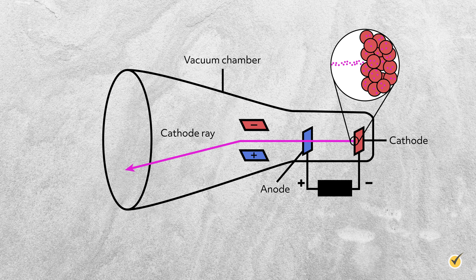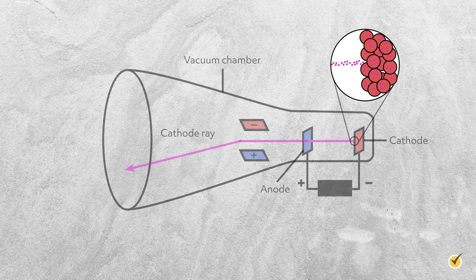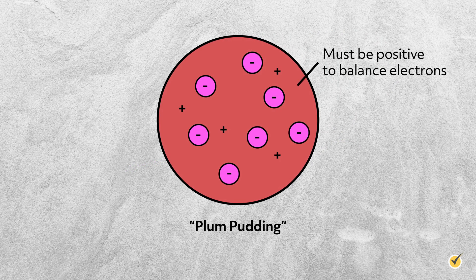Furthermore, knowing that atoms are neutral, Thompson concluded that there must also be a positive charge in an atom as well. Without any experimental evidence, he envisioned the atom as a diffuse sphere of positive charge with electrons randomly distributed inside. This became known as the plum pudding model, named after a popular English dessert in which plums are baked into a cake. This was a huge step forward in understanding subatomic structure as it established the existence of subatomic particles. But obviously, without knowledge of the nucleus, Thompson could not have predicted that atoms are mostly empty space, nor could he have predicted electron configuration.